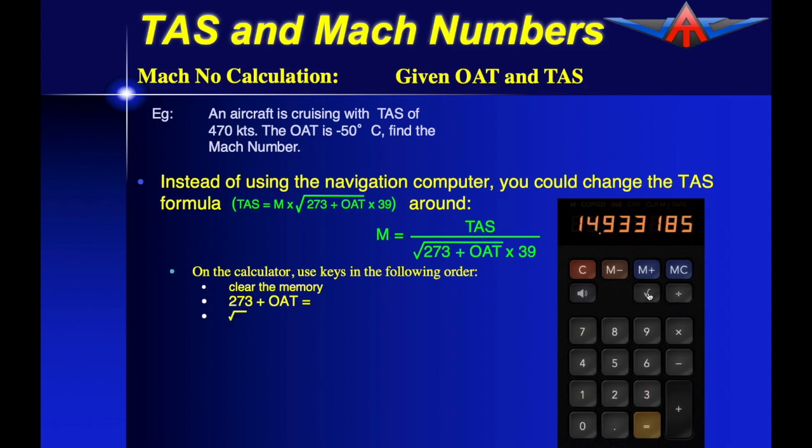We now press the square root to take the square root of that value. Now we need to multiply that by 39 and once again press the equals button to complete the calculation.